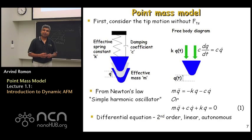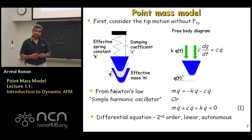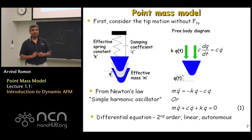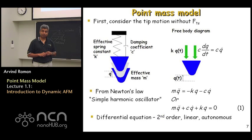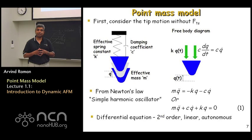Dots over quantities denote time derivatives: q-dot means dq/dt and q-double-dot means d²q/dt². Equation 1 governs the transient oscillations of the probe. It is a second-order, linear, homogeneous ordinary differential equation — also called autonomous — since there is no explicit time-dependent term on the right-hand side. In the next class, we will solve this equation to understand the transient oscillations of the point mass AFM probe model.